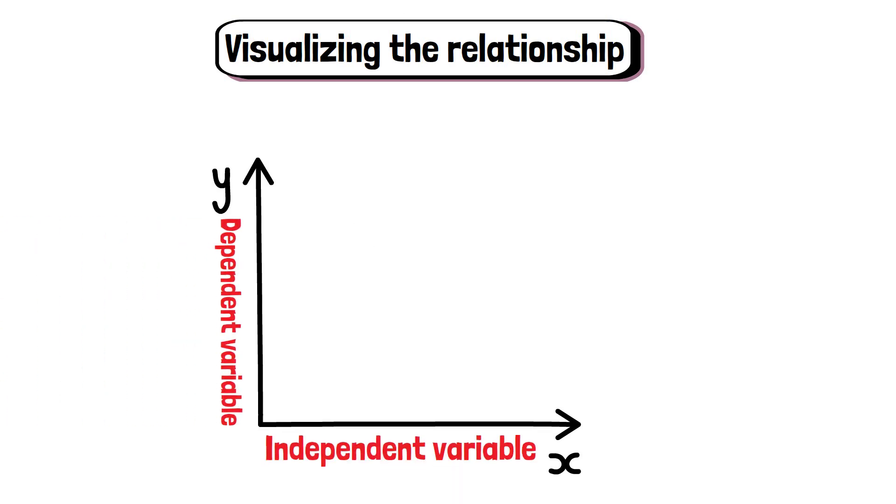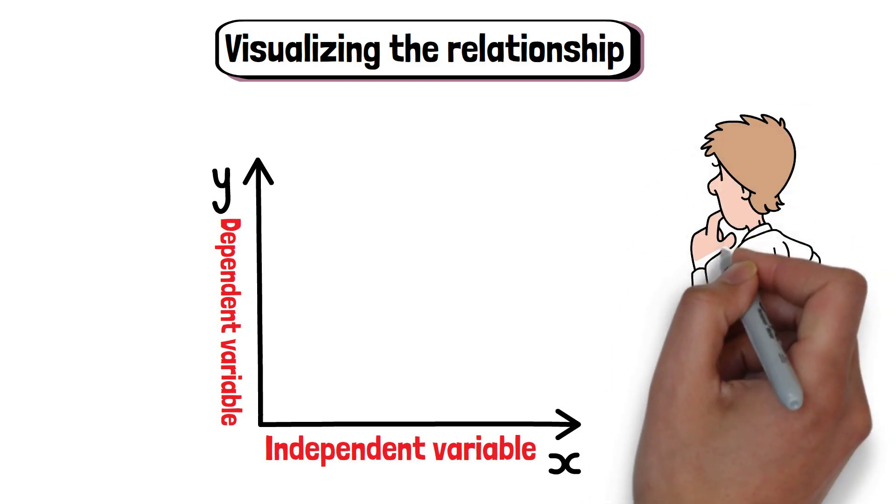Visualizing the relationship can also help. In a graph, the independent variable is usually on the x-axis. The dependent variable is on the y-axis. This setup makes it easy to see trends or relationships.